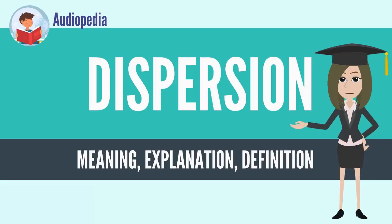In optics, dispersion is the phenomenon in which the phase velocity of a wave depends on its frequency. Media having this common property may be termed dispersive media. Sometimes the term chromatic dispersion is used for specificity.